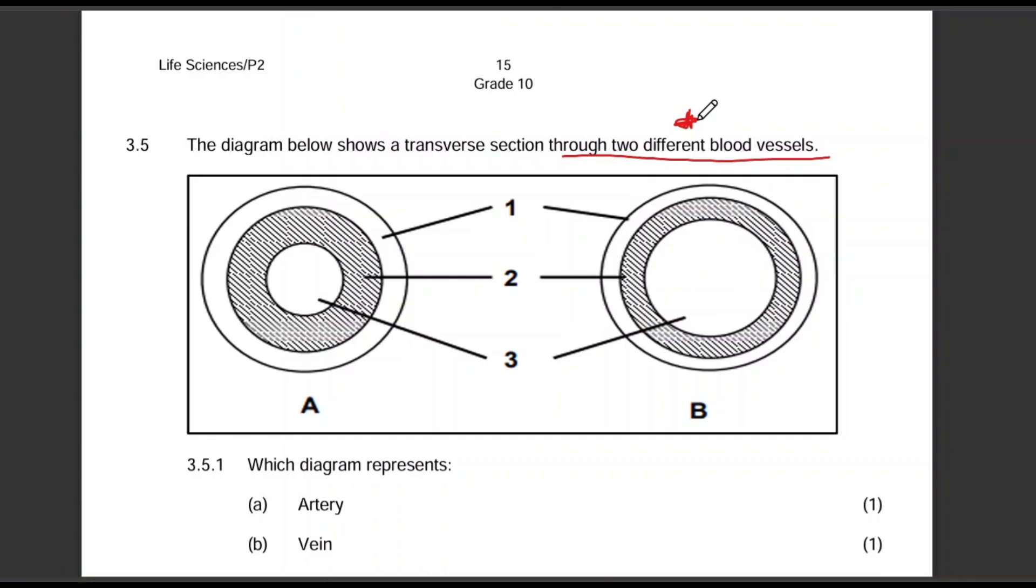Alright, so let's look at the questions. The diagrams are straightforward, hey? Because this is also covered in grade 9. So let's see. We are having two different blood vessels. There's this one, A and B and three labels here. One, two and three.